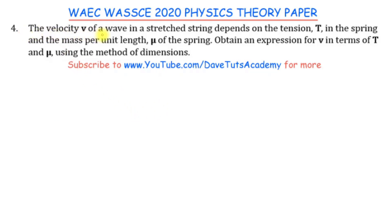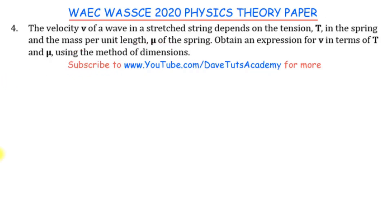In this question we are told that the velocity v of a wave in a stretched string depends on the tension T in the string and the mass per unit length mu of the string. We have to obtain an expression for the velocity in terms of the tension and the mass per unit length, and we have to use the method of dimensions.